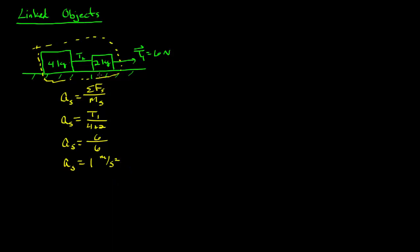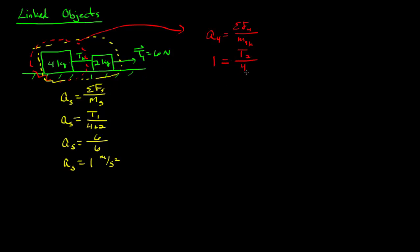Okay, so if the whole thing is accelerating at one meter per second squared, then that means this one's accelerating at one meter per second squared too. So now we can just look at the four kilogram block. The acceleration of the four kilogram is the net force on the four kilogram divided by the mass of the four kilogram. The acceleration is one, and the net force acting on it is T2. So we get T2 over four, meaning T2 equals four newtons.